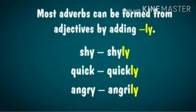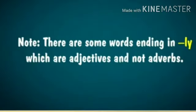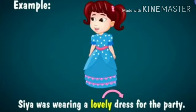Most adverbs can be formed from adjectives by adding -LY. For example: shy → shyly, quick → quickly, angry → angrily. However, there are some words ending in -LY which are not adverbs but adjectives. For example, in 'I was wearing a lovely dress for the party,' 'lovely' ends with -LY but it is an adjective because it is describing the noun 'dress.'